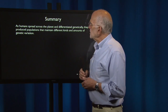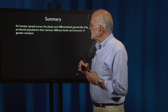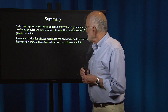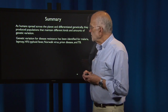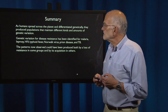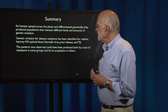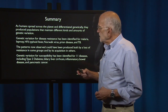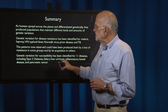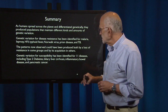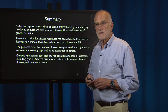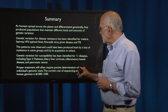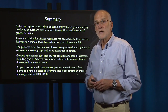To summarize: as humans spread across the planet and differentiated genetically, they produced populations with different kinds and amounts of genetic variation. Genetic variation for disease resistance has been identified for malaria, leprosy, HIV, typhoid fever, Norwalk virus, prion disease, and tuberculosis. The patterns observed could have been produced both by a loss of resistance in some groups and by its acquisition in others. Genetic variation for susceptibility has been identified for 11 diseases, including type 2 diabetes, biliary liver cirrhosis, inflammatory bowel disease, and pancreatic cancer. Proper treatment will often require precise determination of an individual's genomic state, and the current cost of sequencing that state is about $1,000 to $1,500, so it is getting within reach.